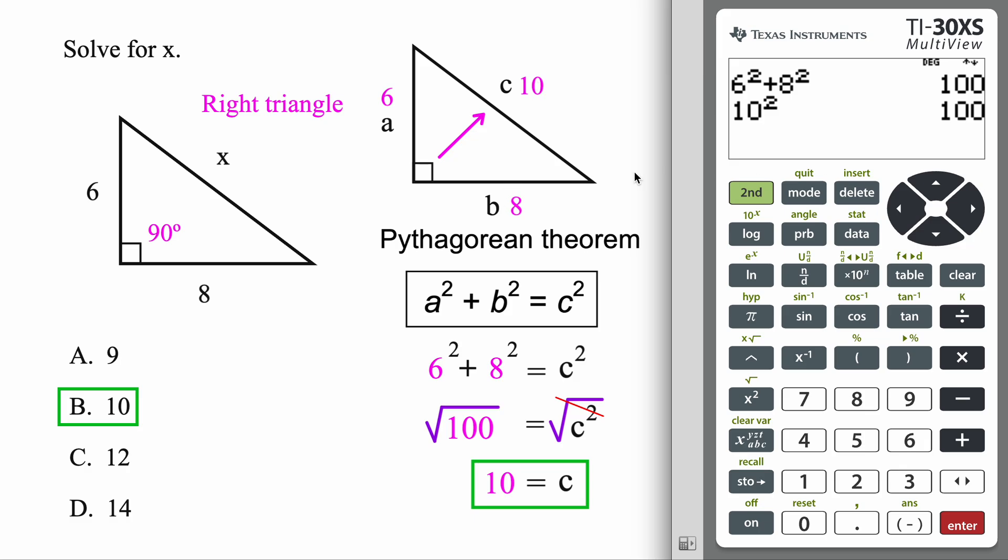So that's it. Pythagorean theorem, it's just a way to find a missing side length for any right triangle.